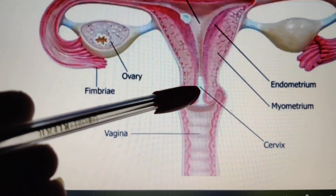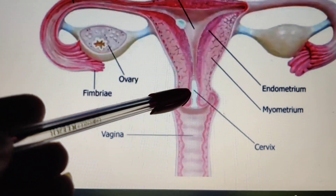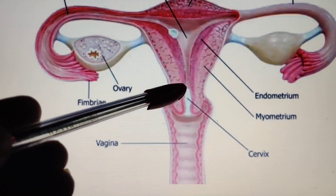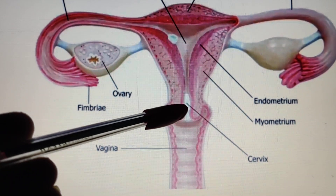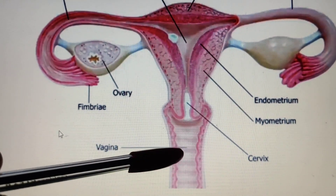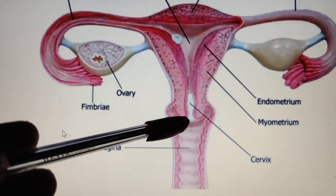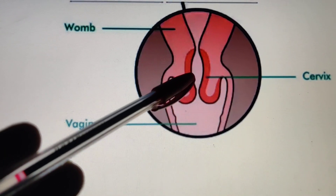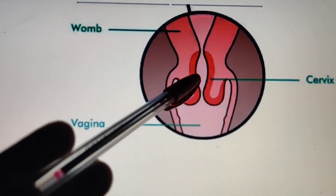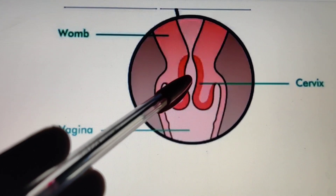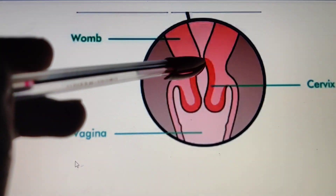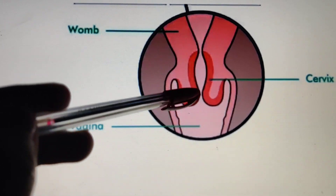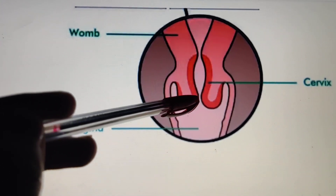The cervix is a very narrow part. It opens inside the uterus through the internal os (opening) and opens outside into the vagina through the external os (opening). So this is how the cervix appears — it has this internal opening, the internal os, and this is the external opening or external os.